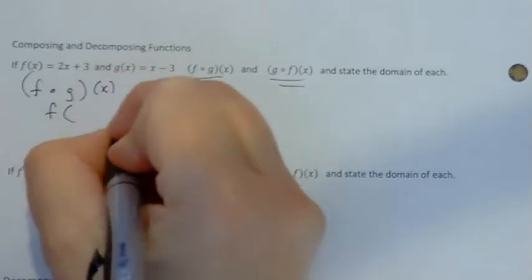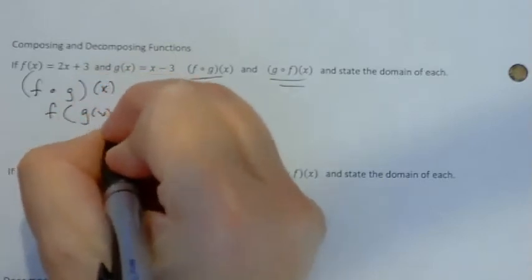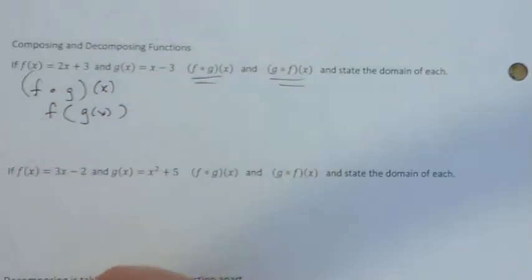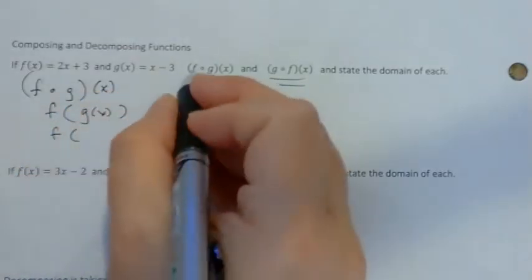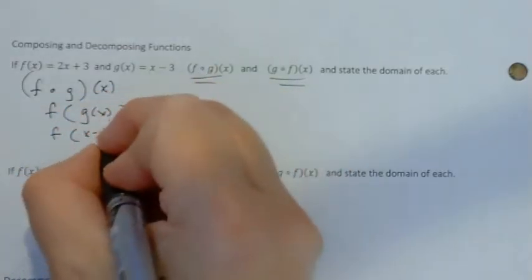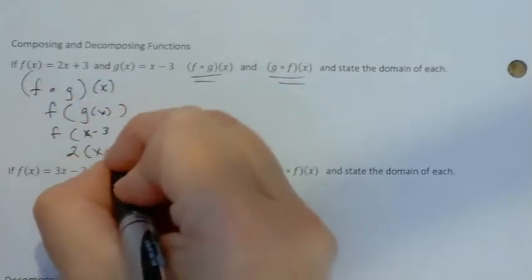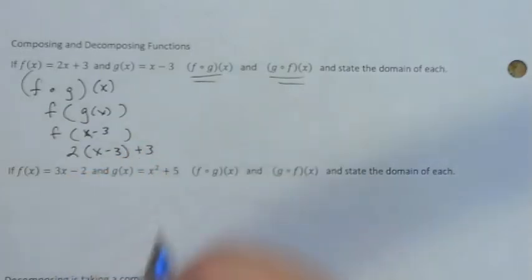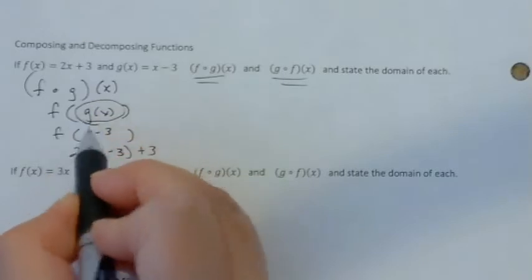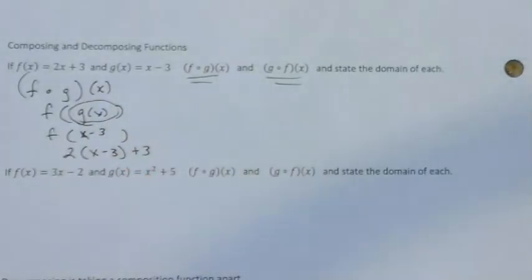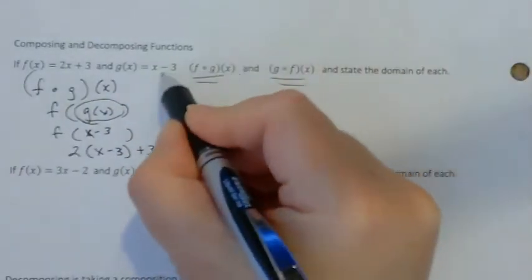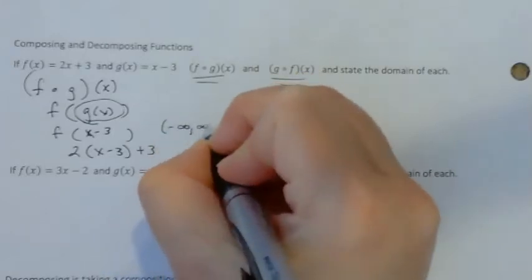This means that you have f composed with g. So I'm going to put g as the inner function, and now I'm going to put that as the input in the f function. So that would be the new function. The domain of this particular function is the domain of the inner function. So the thing that I put in first was the g function. And since the g function is a linear equation, the domain would be negative infinity to infinity.